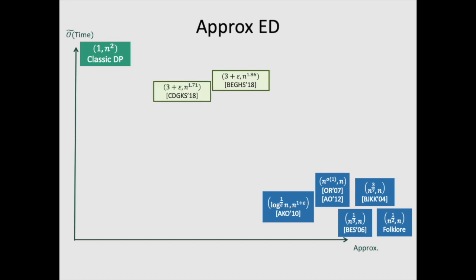This was further followed up by CDGKS in their own breakthrough, which showed that in subquadratic time you could get a 3 plus epsilon approximation, classically.